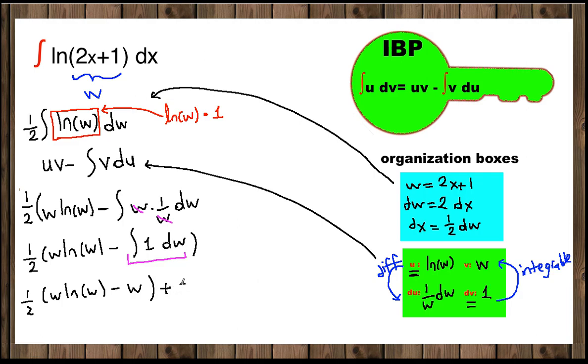Plus C. Now everything is ready. We have to bring whatever we substituted in the beginning back. So we have to bring all w's back. So 1/2, instead of w we're going to write 2x+1.